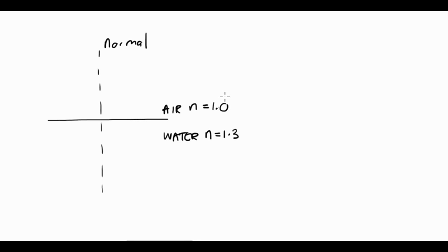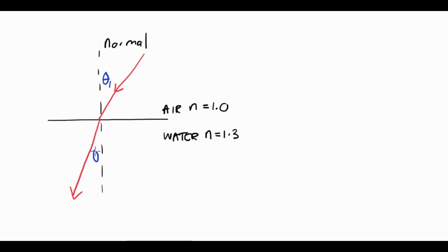In the case of light travelling from a less optically dense medium, like air, into a more optically dense medium, like water, we can represent that with a light ray coming in. The angle between the normal and the light ray is called the angle of incidence — we call that theta 1. When the light enters the more optically dense medium, it slows down, and when it slows down, it bends towards the normal. Going from less dense to more dense, theta 1 is going to be greater than theta 2.